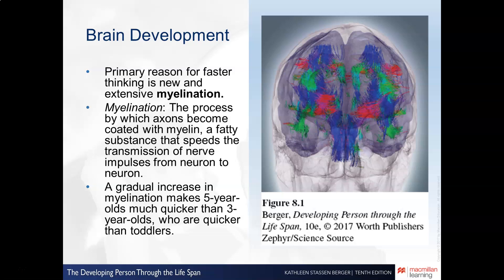Myelination is the whole reason why when we become more experienced at something, we tend to get better and faster at it. That's why studying and practicing tends to make us better and faster at almost everything — because myelination is occurring along the axons.